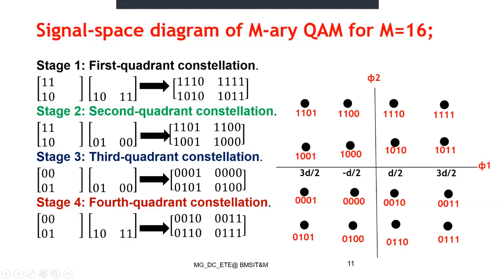In the first quadrant, the vertical constellation (top-down) gives 11 and 10, multiplied with the horizontal constellation (left-to-right) giving 10 and 11, producing four first-quadrant message points. Similarly, the second, third, and fourth quadrants are derived. This is the procedure to write message points in the signal constellation diagram for different levels of M-QAM.